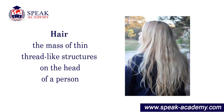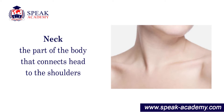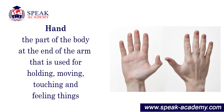Hair: the mass of thin thread-like structures on the head of a person. Neck: the part of the body that connects the head to the shoulders. Hand: the part of the body at the end of the arm that is used for holding, moving, touching, and feeling things.